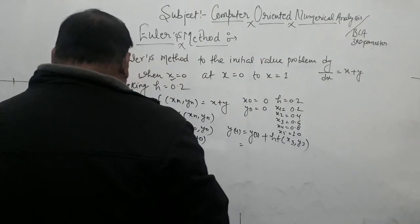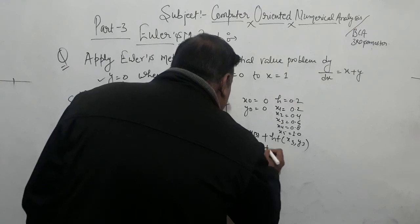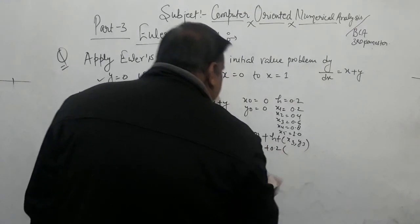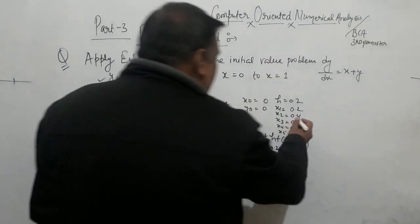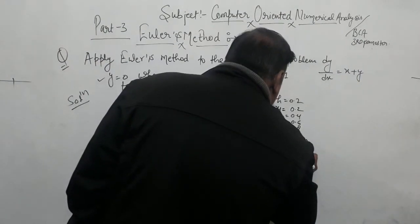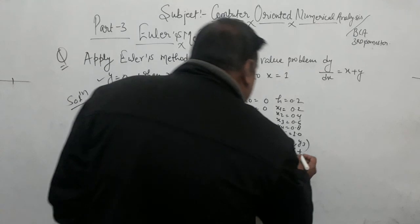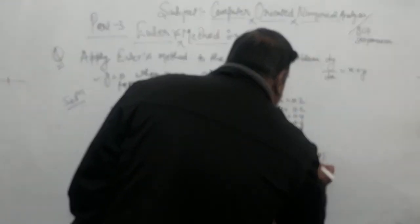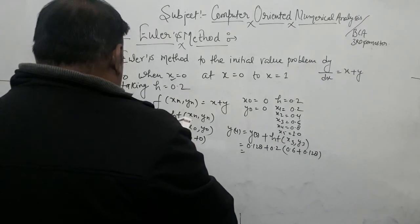So y3 — how much did it become? y3 = 0.128 plus 0.2 times (x3 plus y3). x3 is 0.6, y3 is 0.128.